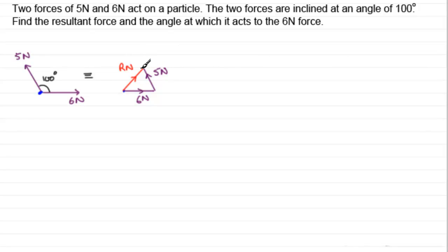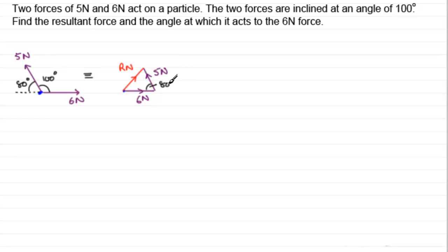In order to work out what R is, I'm going to need to use trigonometry — I need a few angles in this triangle. I know two sides and I know this angle in here. The angle between the 5 and the 6, extended out, would be 80 degrees, making up the 180 degrees around this point. So this angle in here is going to be 80 degrees. We also want to find the angle that the resultant makes with the 6 newton force, which we'll call theta.